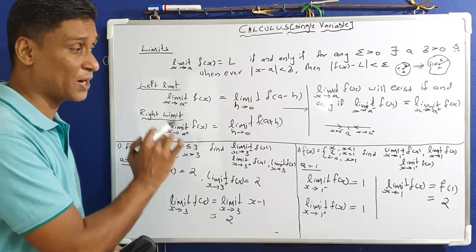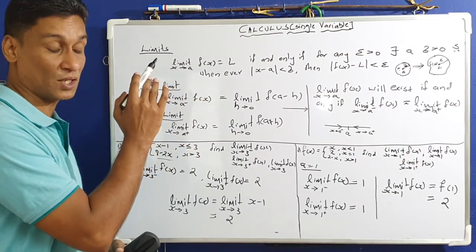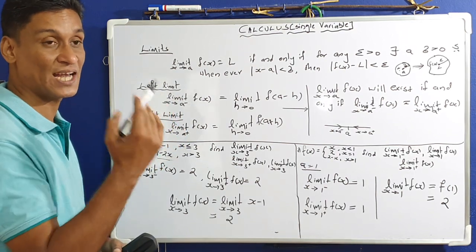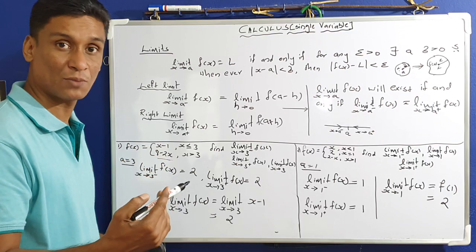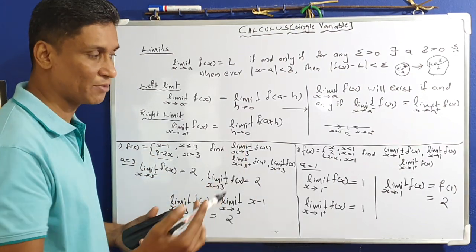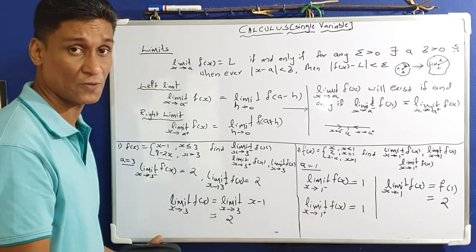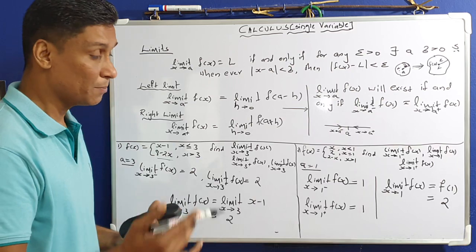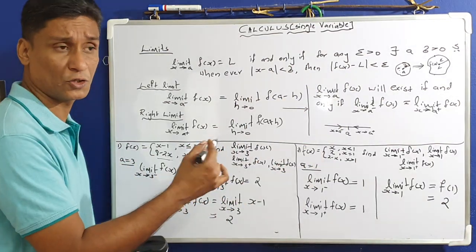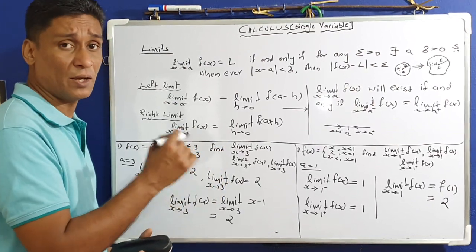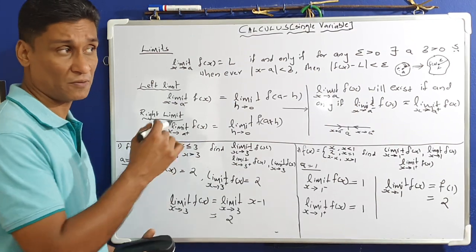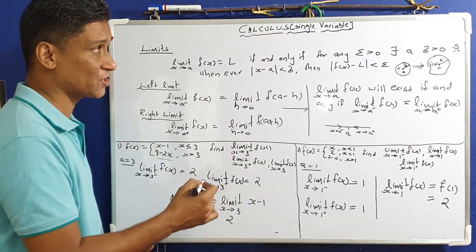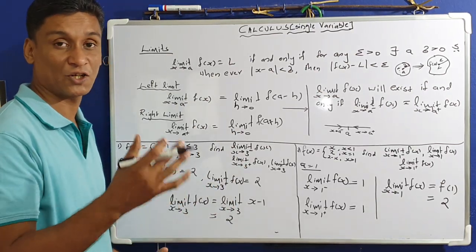The limit exists only when left limit and right limit are both equal. If they are equal, the limit can happen — the limit exists. But if the left and right limits are different, the limit does not exist, and we cannot proceed further for continuity or differentiability. This concept is basic: if the left and right limits are different, it's not continuity. This is the fundamental idea of limits.